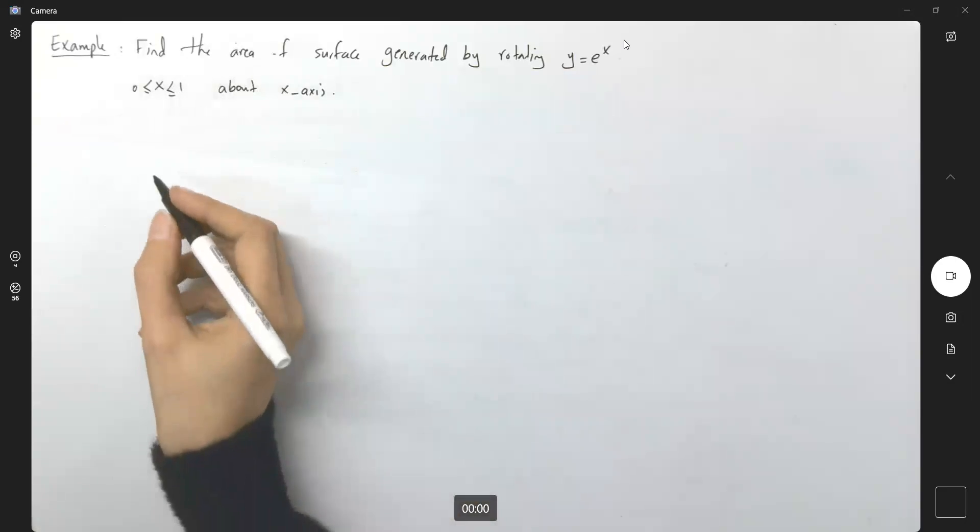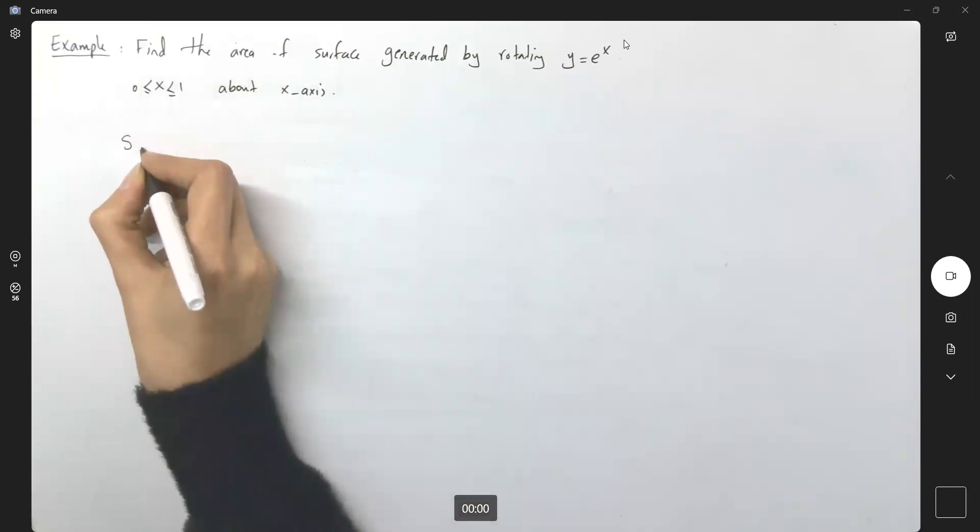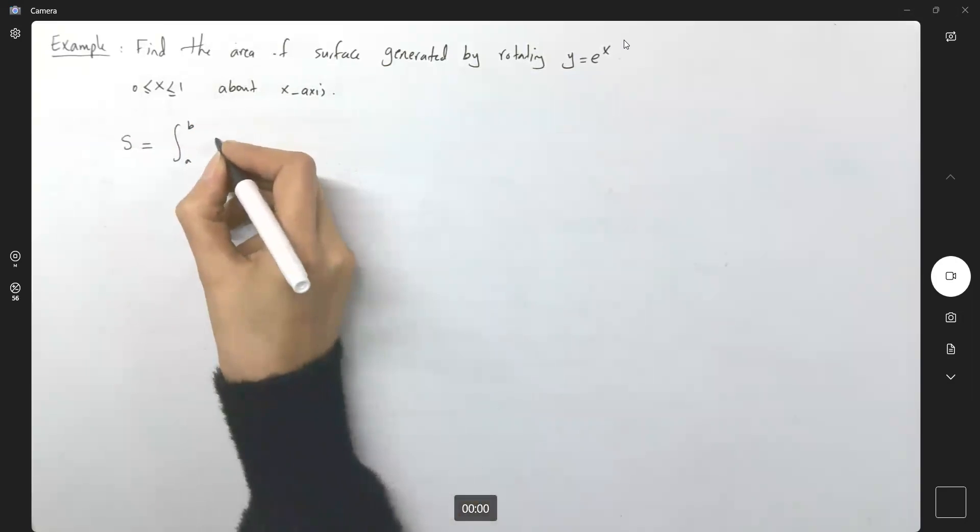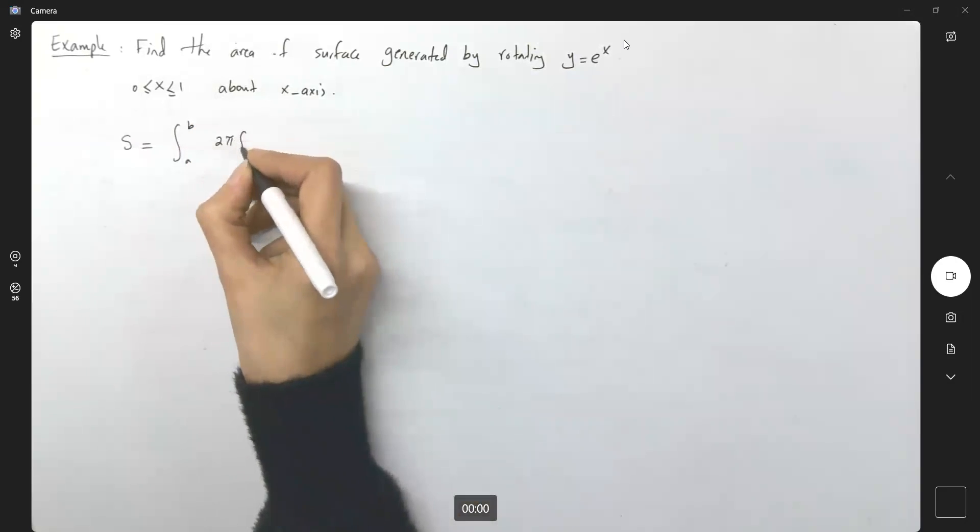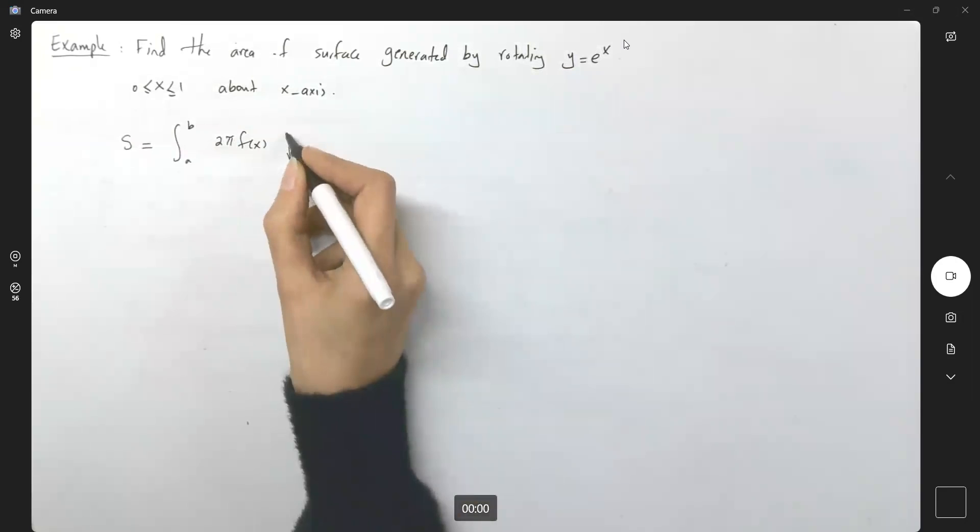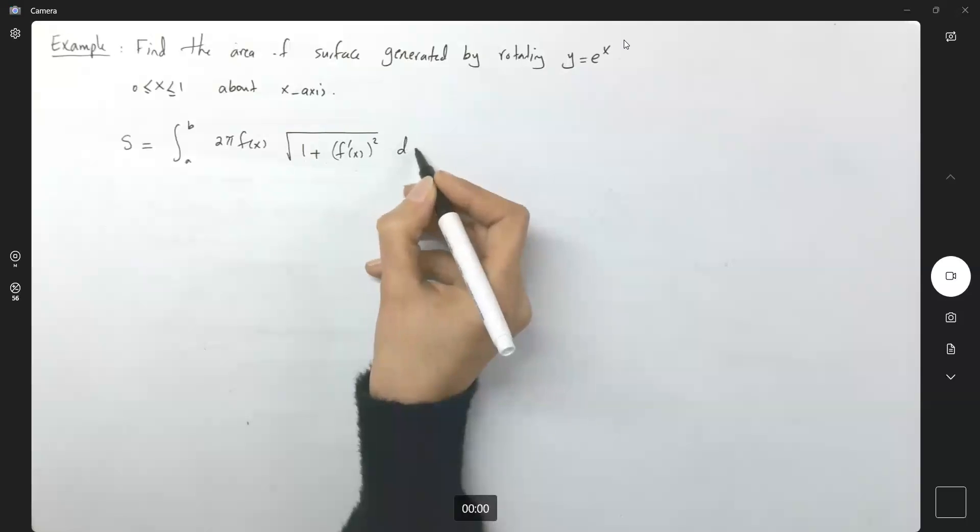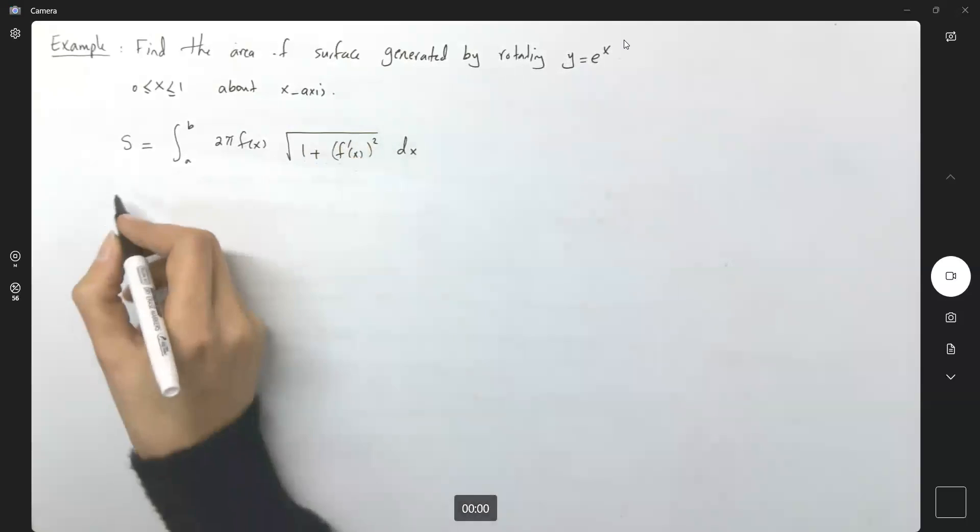So let us recall the formula. The surface area is the integral from a to b of 2π f(x) times the square root of 1 plus the derivative of f squared, dx.